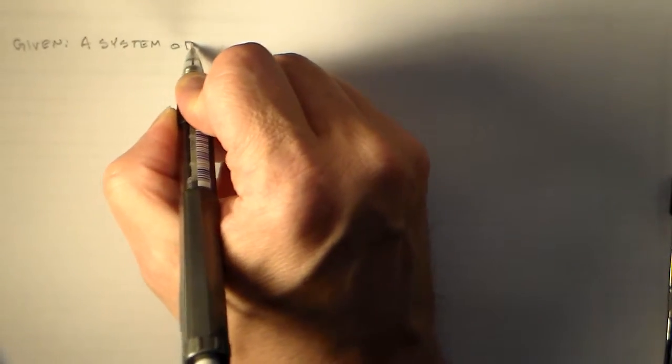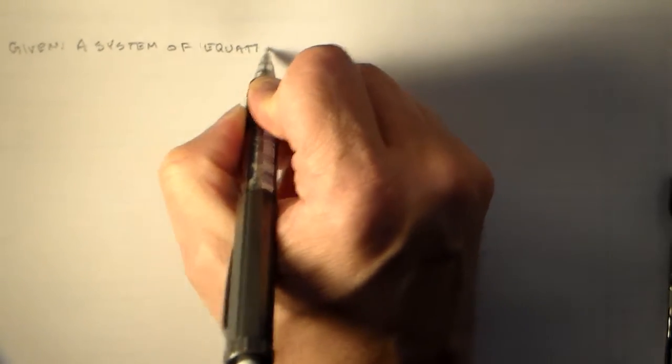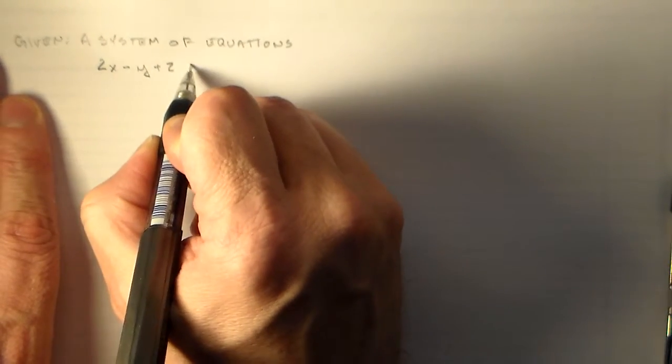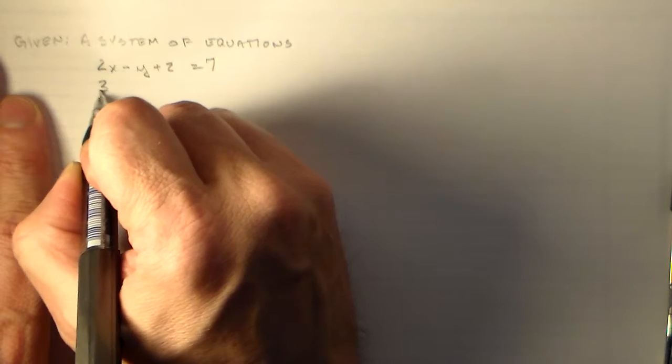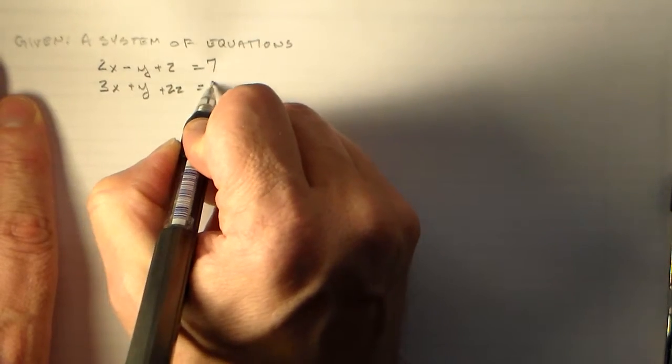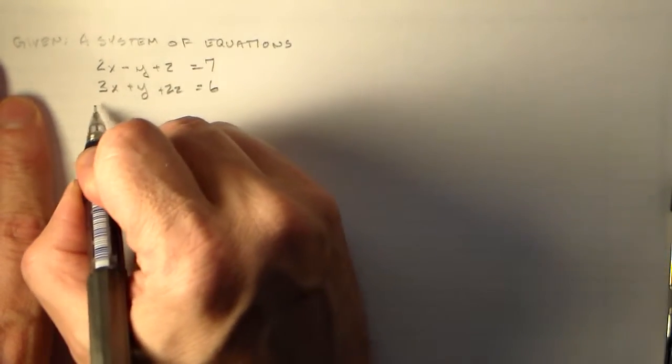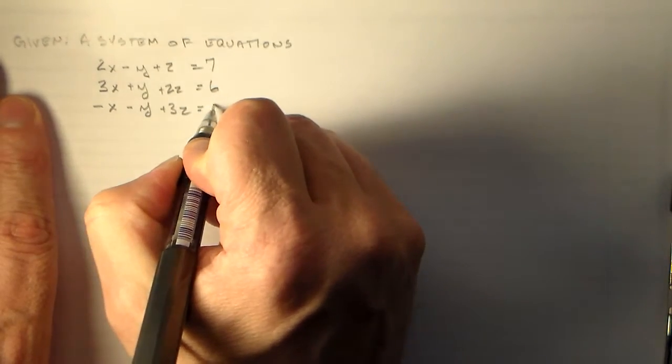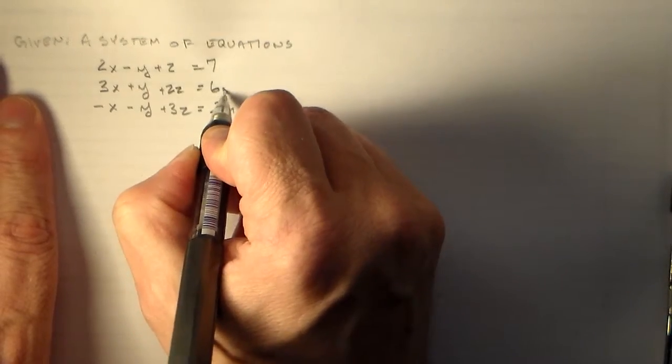So I'm going to be given a system of equations. Okay, and the system of equations looks something like, what did I write down, 2x minus y plus z is equal to 7. And 3x plus y plus 2z is equal to 6. Then I have minus x minus y plus 3z is equal to 3. And let's go ahead and make these in meters.